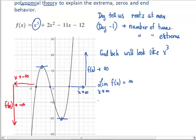So this is how we describe using polynomial theory how many extreme values we can have, how many zeros we can have, and what the end behavior would look like.